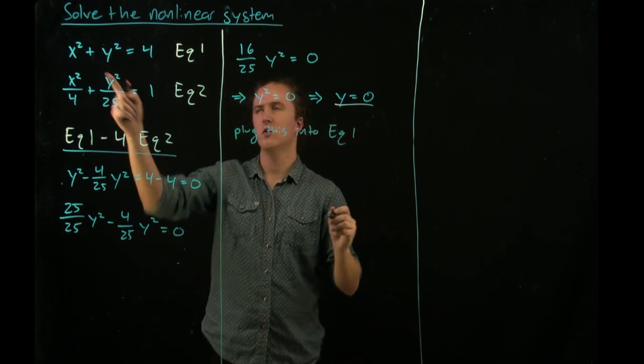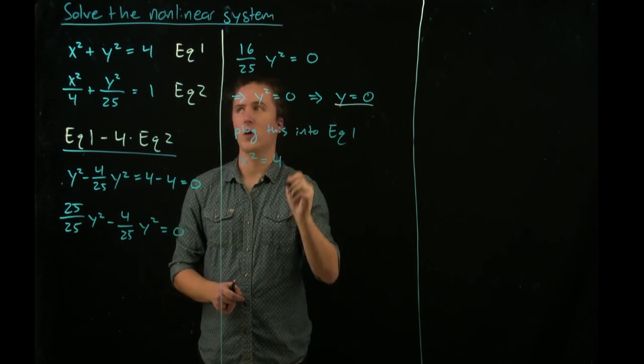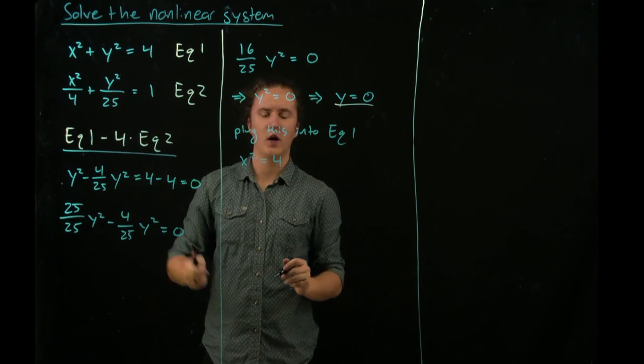When we do so, we get that x squared is equal to 4, because again y squared is 0.